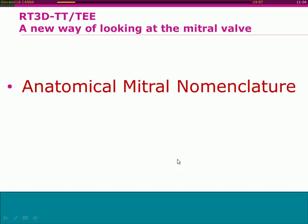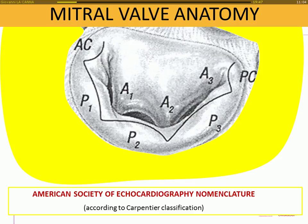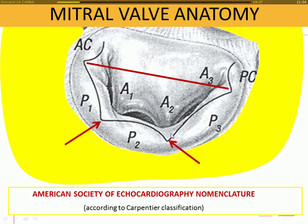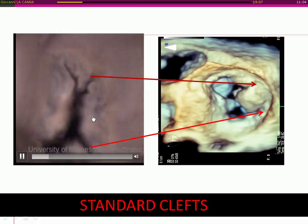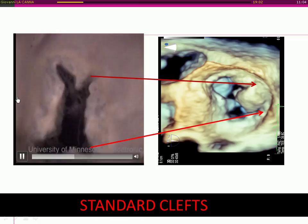One of the most important advantages of this new way of looking at the mitral valve is the ability to obtain an anatomical mitral nomenclature. The Carpentier nomenclature, commonly used in clinical practice, is based on identification of the commissure to distinguish anterior and posterior leaflets, and the recognition of clefts to identify the units of the posterior leaflet named scallops — a scallop being defined as a segment of mitral valve tissue between two clefts.